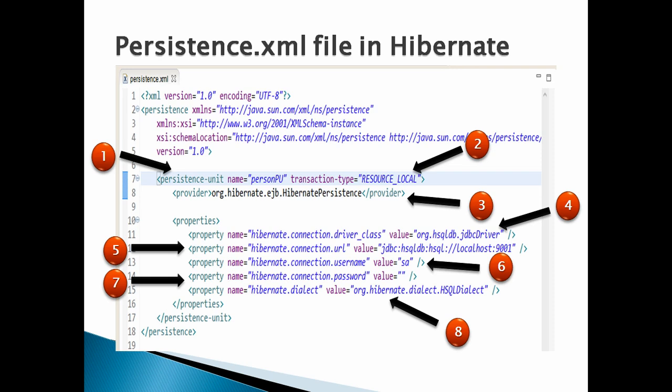Number seven: in persistence.xml we have to provide the password to the HSQL database server for a particular username. It takes a property named 'hibernate.connection.password', with value in our case as an empty string. This tells Hibernate to point to the HSQL database server which has a password with the mentioned value.